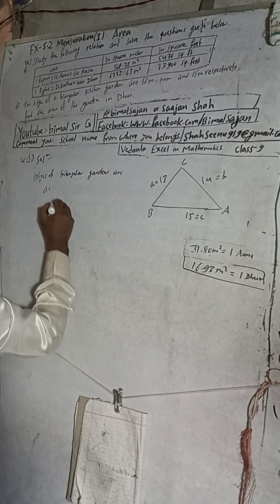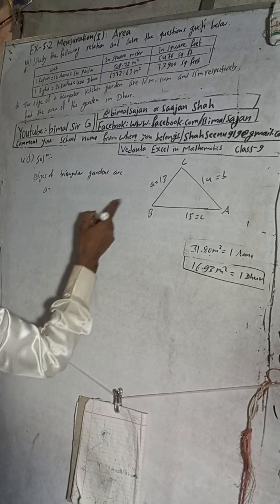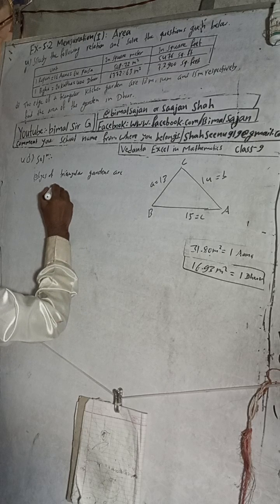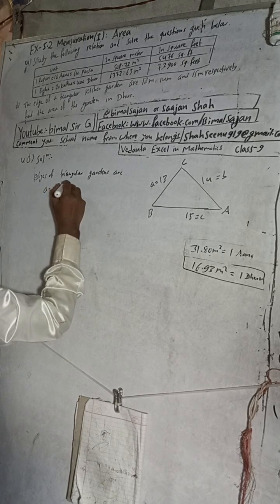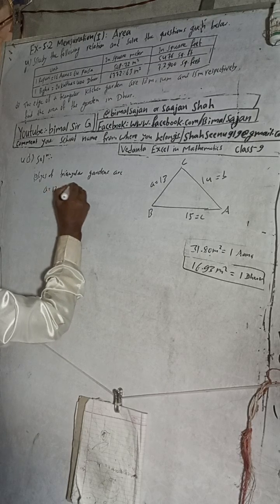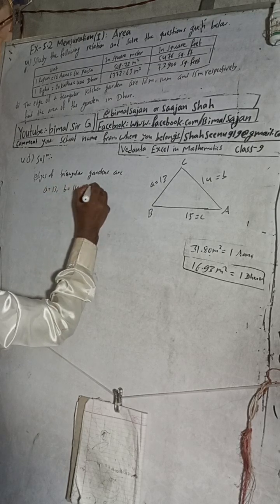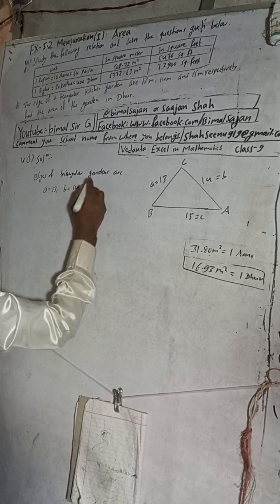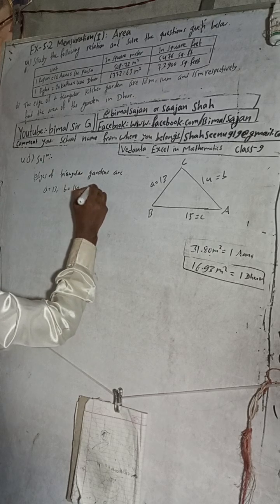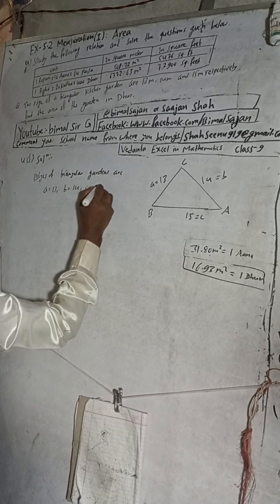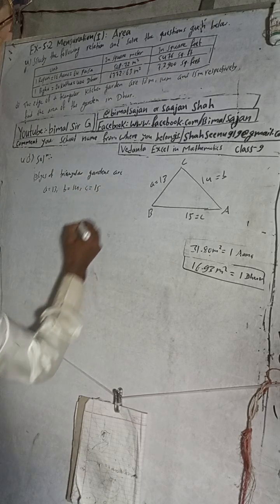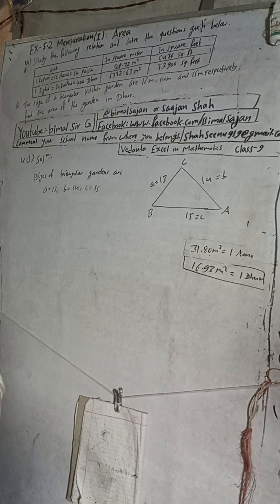So a is equal to 13 meters, b is equal to 14 meters, c is equal to 15 meters.